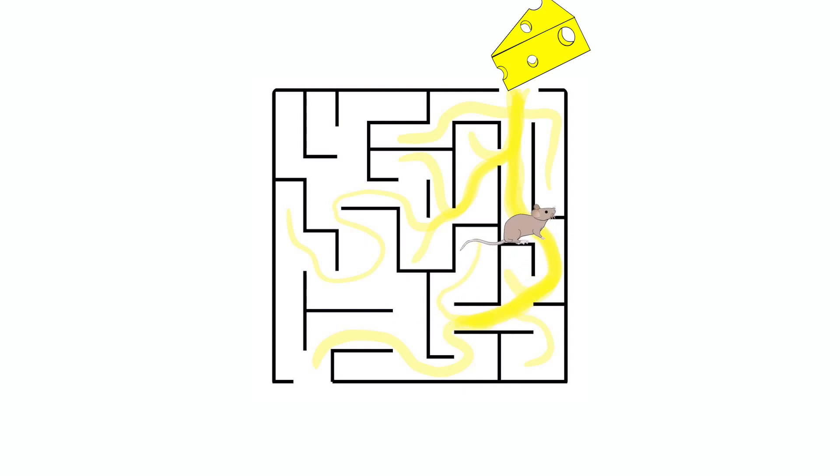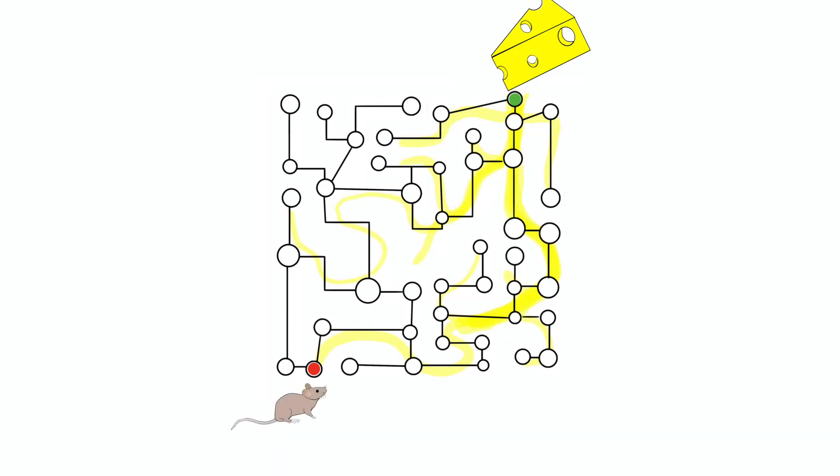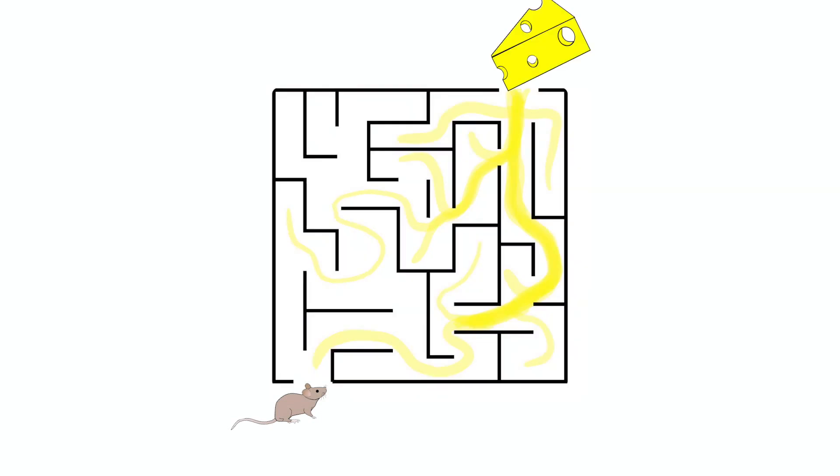You can model this maze as a graph and the sense of smell as a heuristic. As the mouse gets closer to the cheese, the smell gets stronger. At the beginning of the maze, the heuristic or smell indicates that the cheese will be closer if the mouse goes right, so the mouse will go that way.